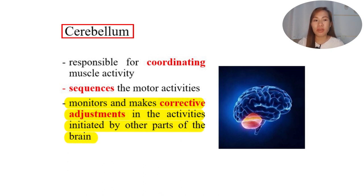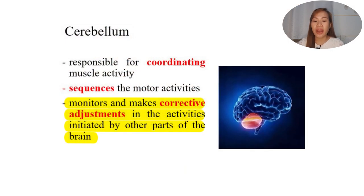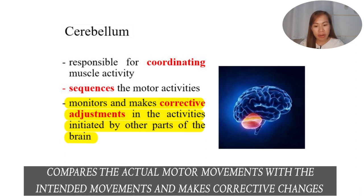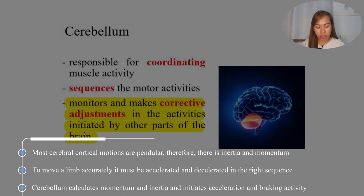The cerebellum monitors and makes corrective adjustments to activities initiated by other parts of the brain. For example, someone like Stephen Curry, through constant practice, develops proper coordination and correct sequencing — and that is how he achieves a perfect three-point shot. The cerebellum compares the actual motor movement with what is intended and makes corrective changes. Most cerebral cortical motions are pendular, so there is inertia and momentum, and in order to move a limb accurately it must be accelerated and decelerated in the right sequence.